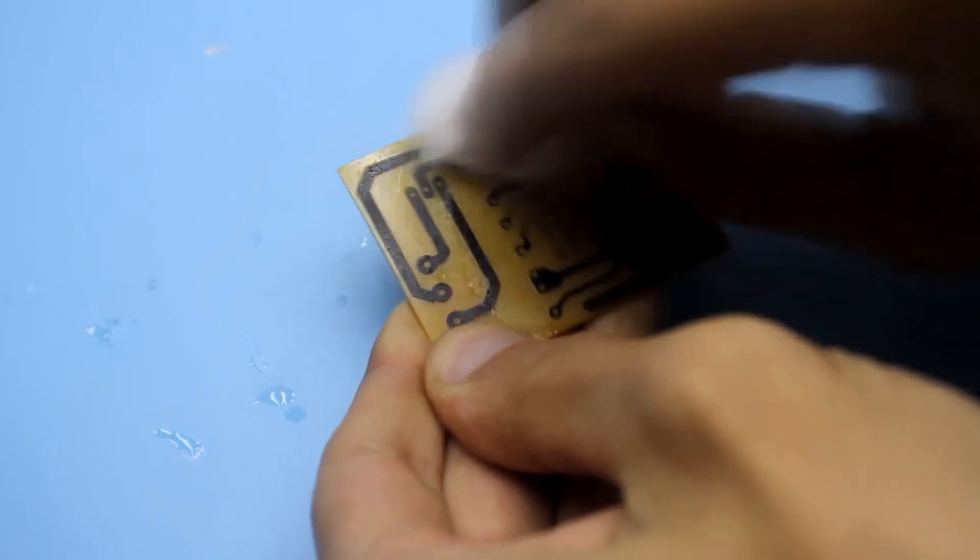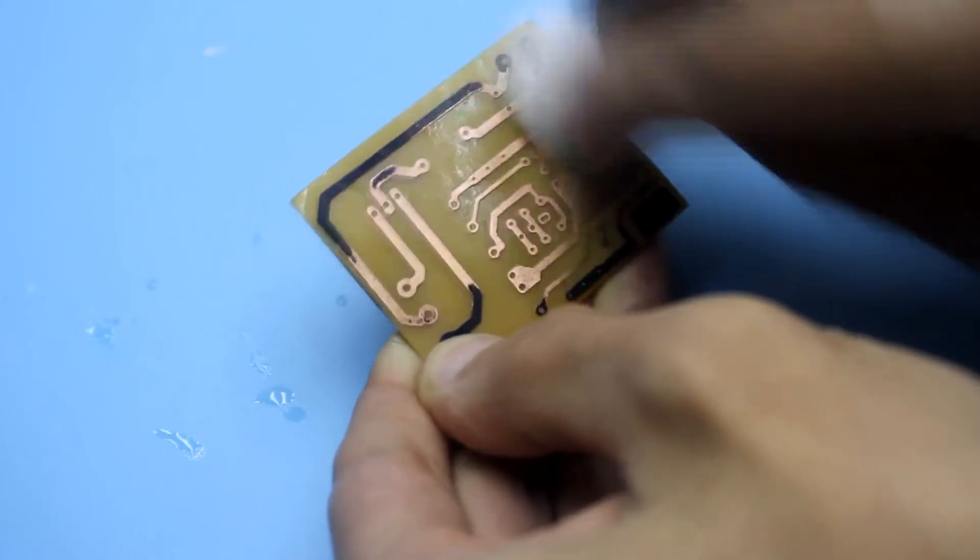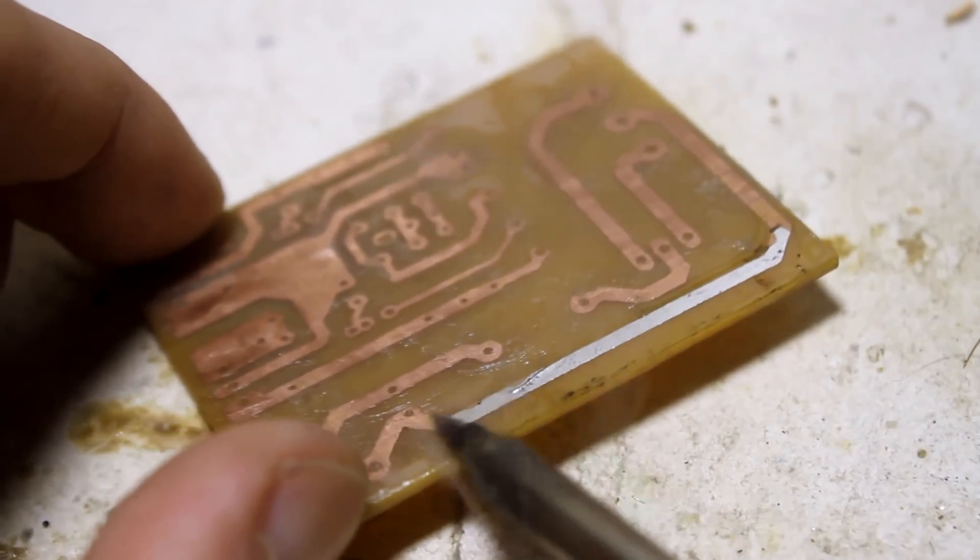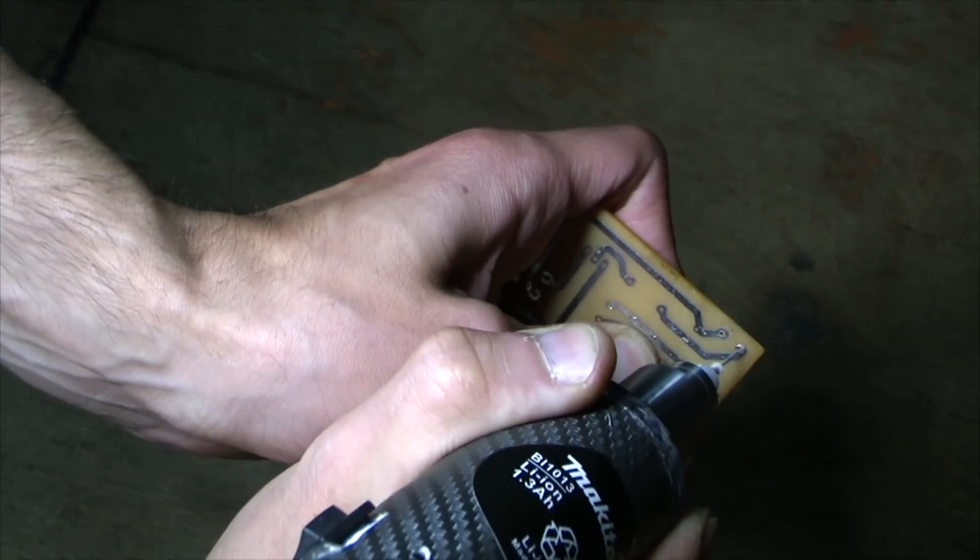After etching, the board is cleaned of the toner. The copper surface is treated with fine sandpaper. The next stage is tinning the tracks, then drilling and installing the components. But we will talk about this some other time.